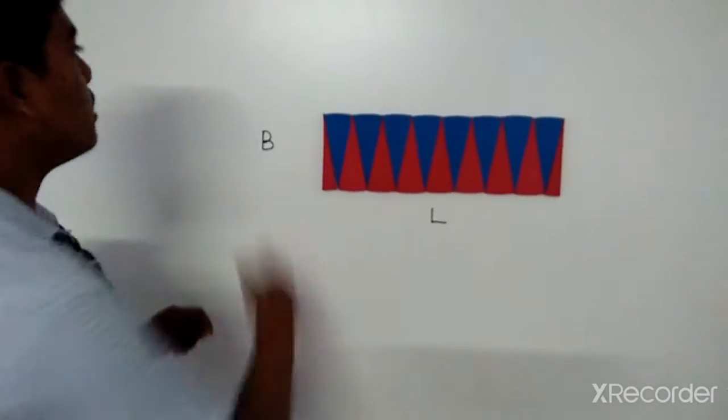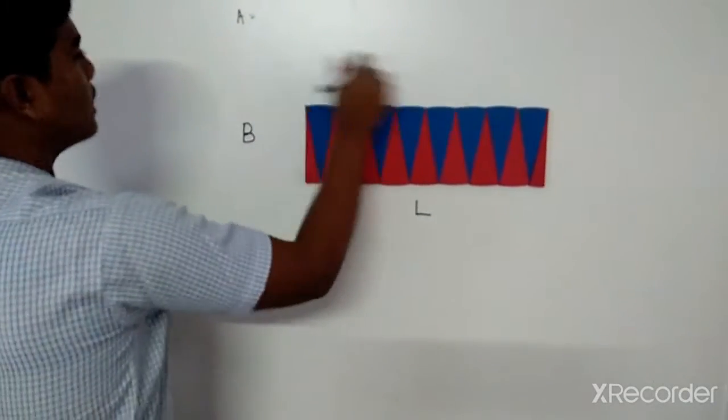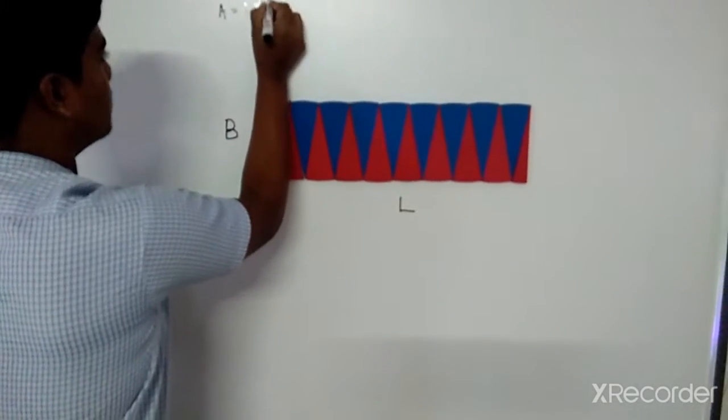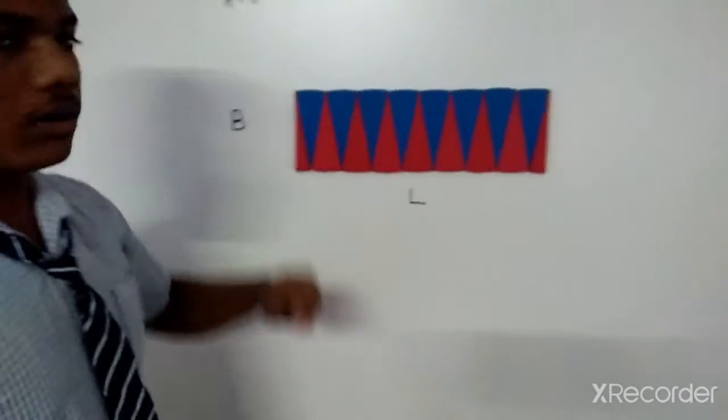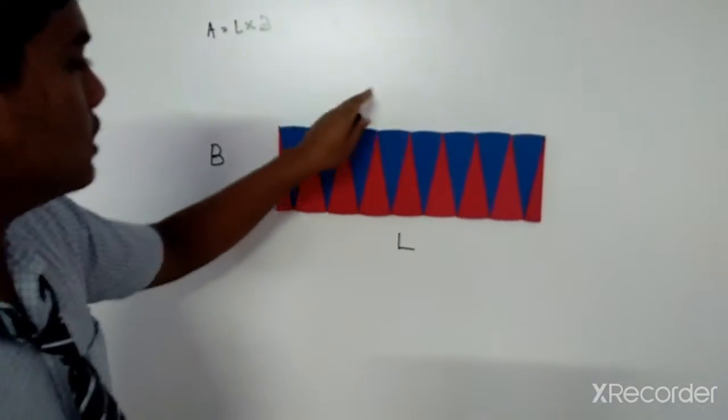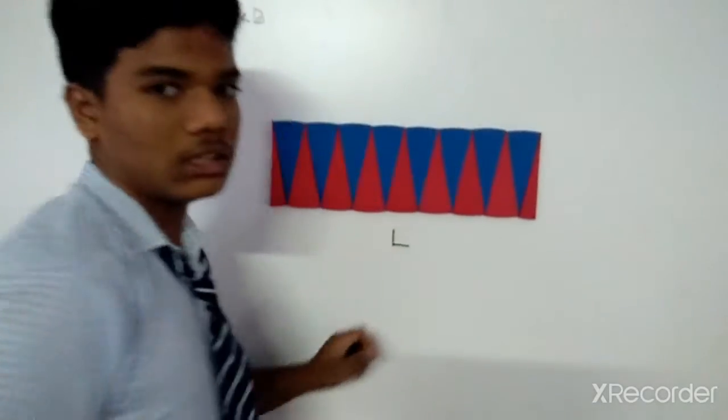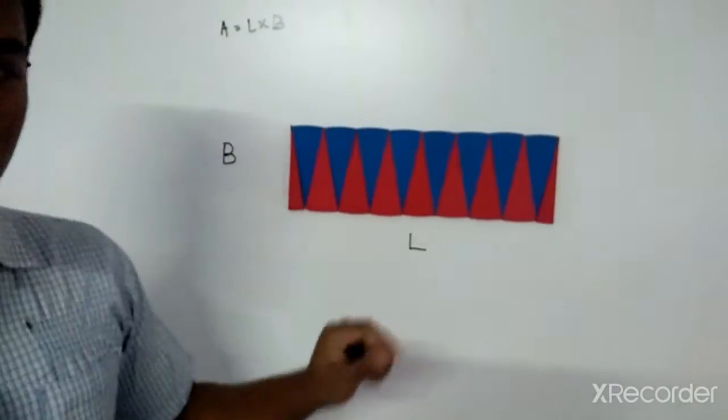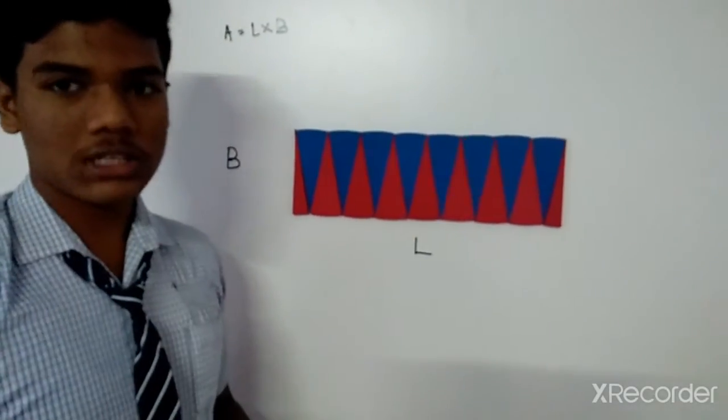The area of the rectangle is length into breadth. Now, sum of this two length is equal to circumference of circle.